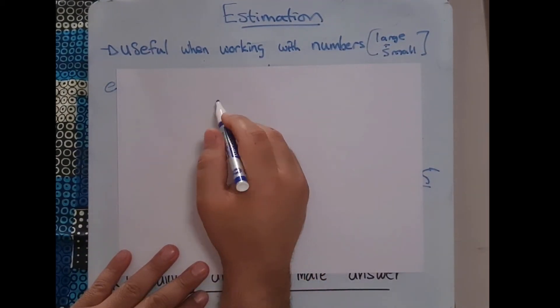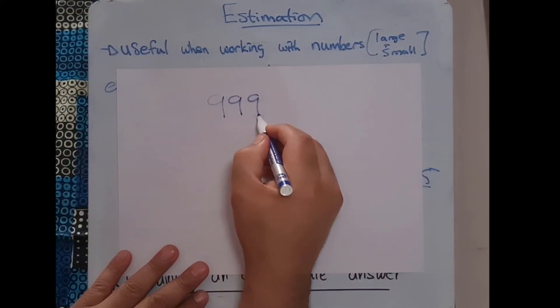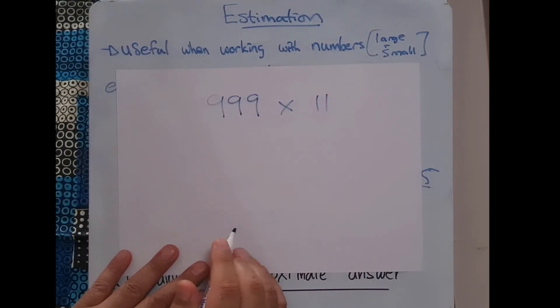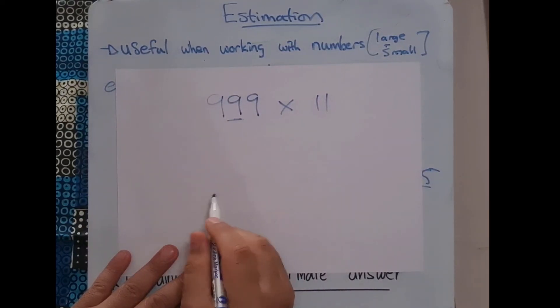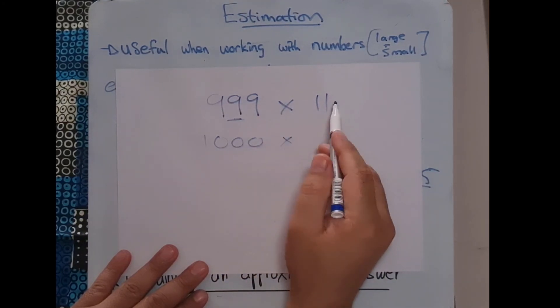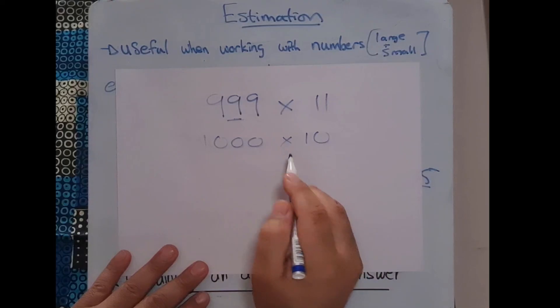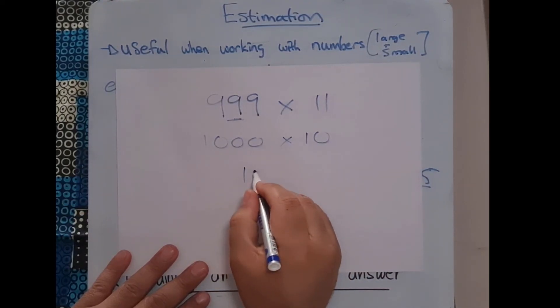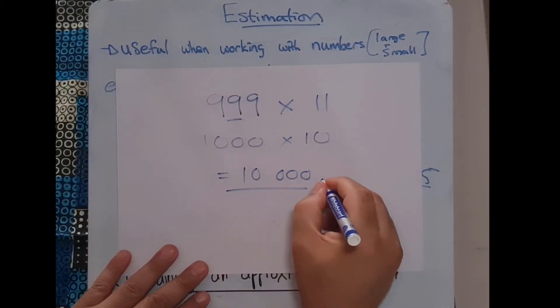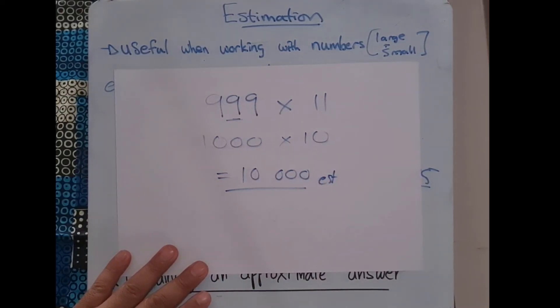Another example would be something like this: 999 multiplied by 11. So immediately I can take that and say well, I can estimate that to 1000, multiply that by, well let's not use 11, let's estimate that at 10. And what's going to happen? That's going to end up being 10,000. Again, an estimated answer.